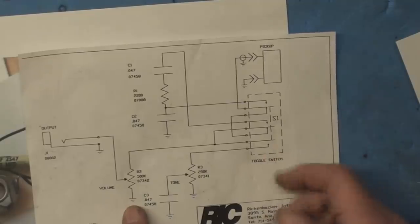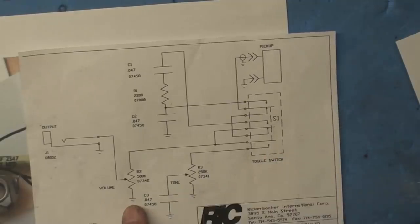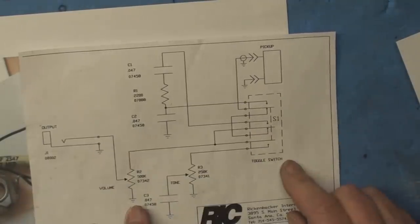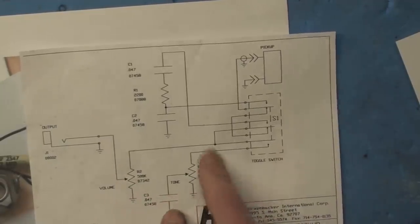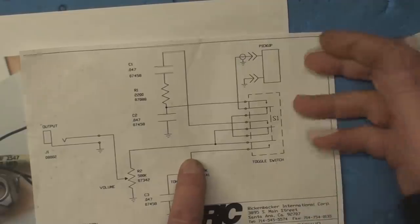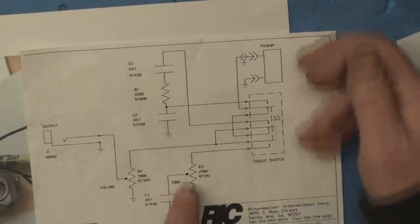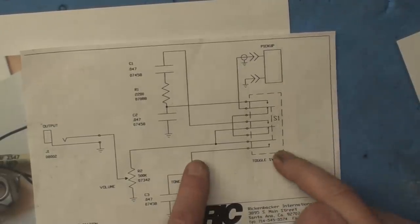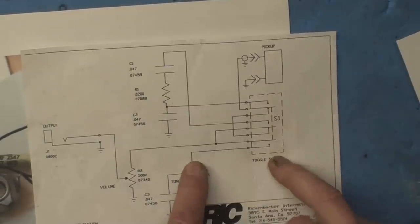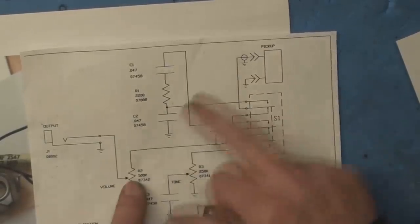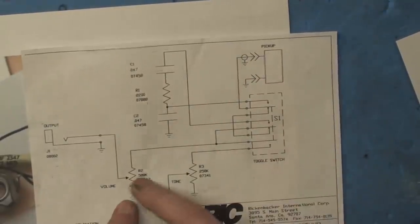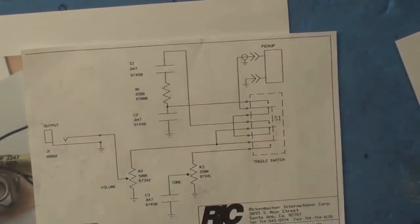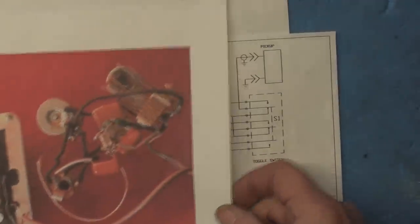You get one position - it's the pickup and the volume control right out the door. Another position, you get the pickup, volume control, and the tone control. The way it's supposed to work is you flip to the third position, and if I trace it, it negates the tone control and this tone-sucking thing comes into play and you have a volume control.